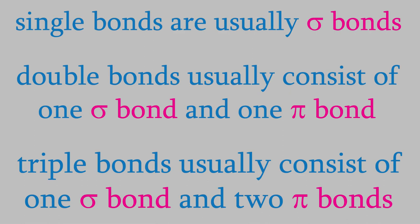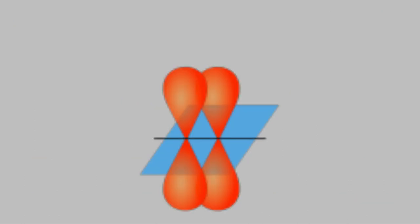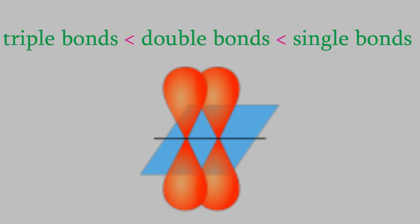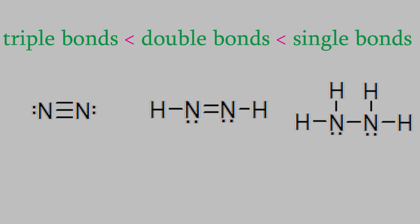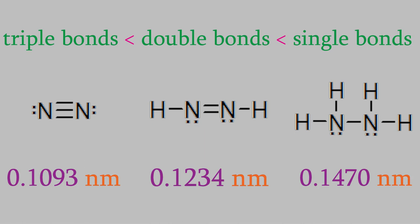As you might have noticed, in order to have a pi bond, the atoms have to be pretty close to one another, so that the p orbitals on each atom can overlap. That means a triple bond is usually very short, while double bonds are a bit longer, and single bonds are the longest. That turns out to be very true. If we compare these three molecules, you can see that one has a nitrogen triple bond, one has a double bond, and one has a single bond. And just as we predicted, the triple bond is the shortest, at 0.1093 nm, and the single bond is the longest, at 0.1470 nm.